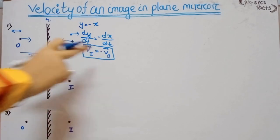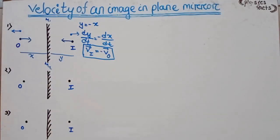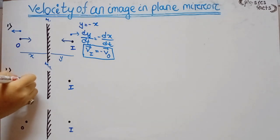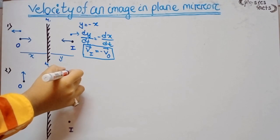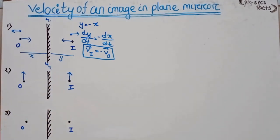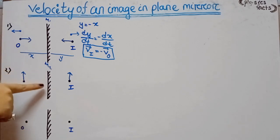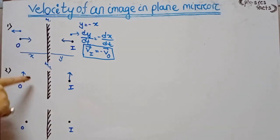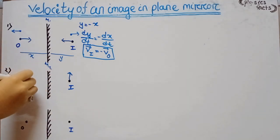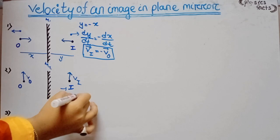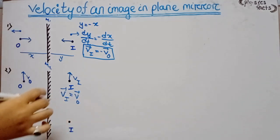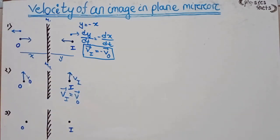Now if the object moves in the upward direction, the image also moves upward. When the object moves parallel to the plane of the mirror, the velocity of the image equals the velocity of the object. There is no change in the velocity of the image in this case.